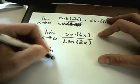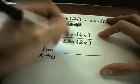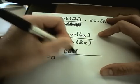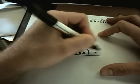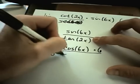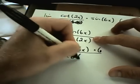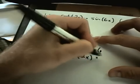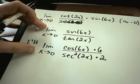So now I've got the limit as x approaches 0. The derivative of sine is going to be cosine of 6x times 6. The derivative of tangent is secant squared of 2x times 2.